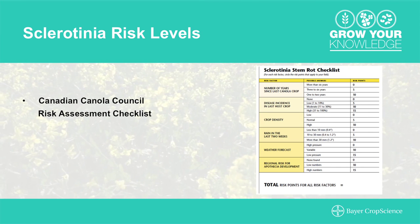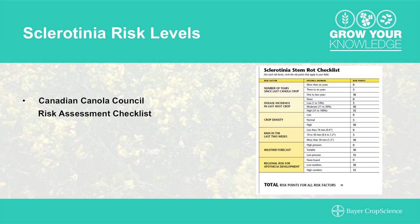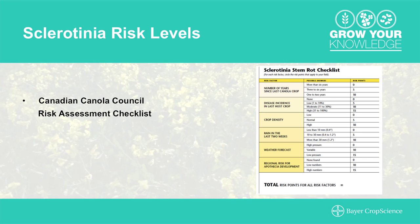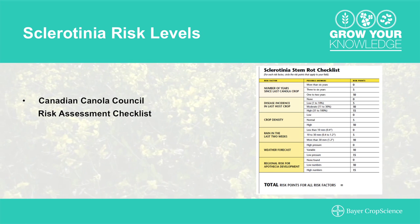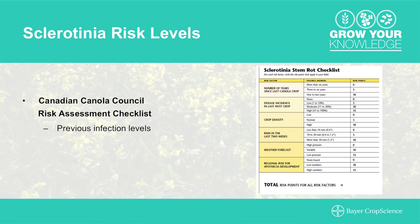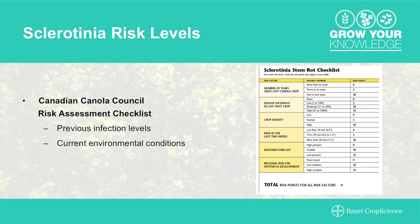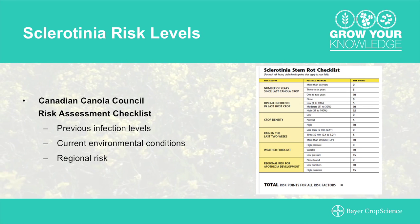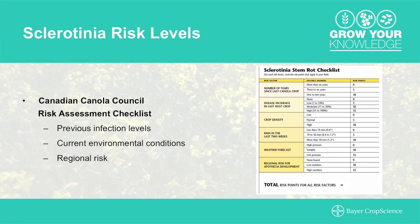What is available for growers to determine risk levels with sclerotinia? Up until now, the disease risk assessment card set up with the Canadian Canola Council has been a good system for getting a read on where you're at. It takes into consideration your rotation and when you last grew canola, previous infection levels experienced in the field, current environmental conditions and weather forecasts, and regional risks from other crops susceptible to sclerotinia as well.